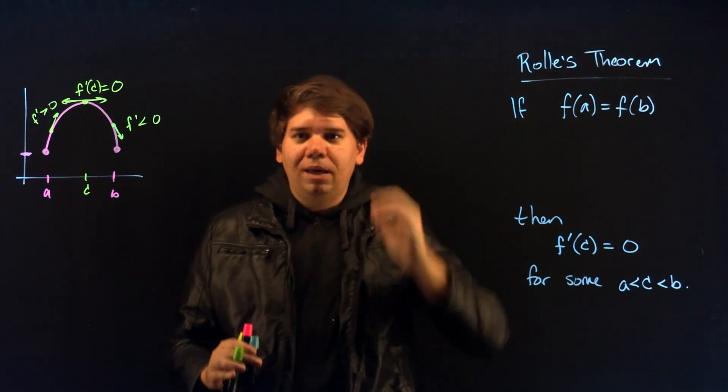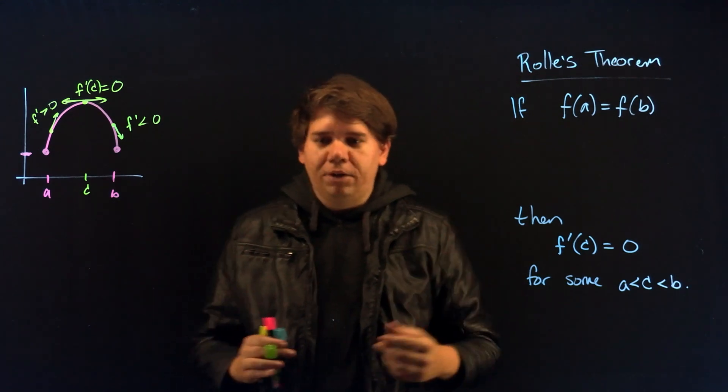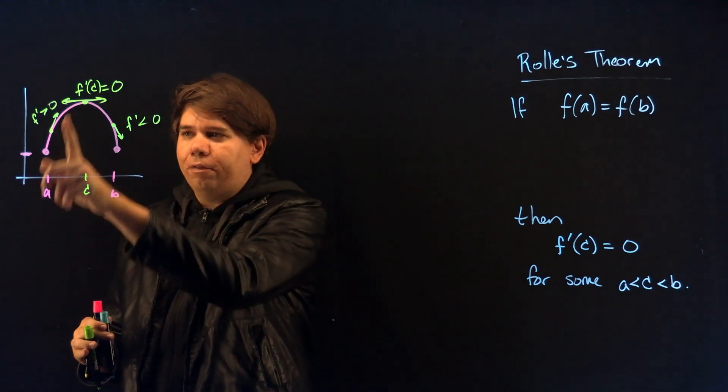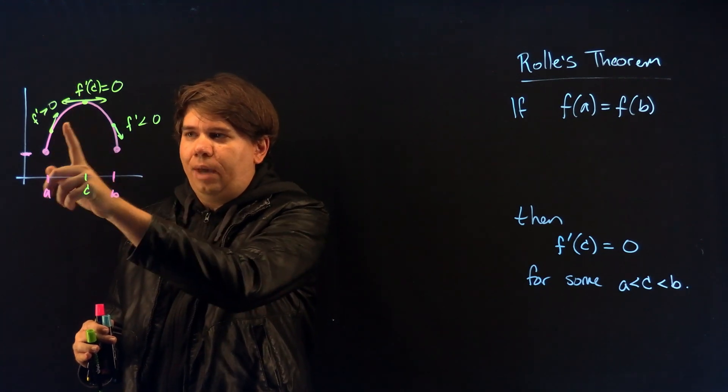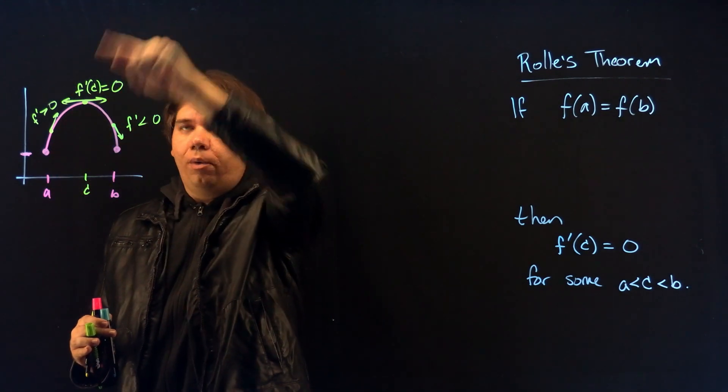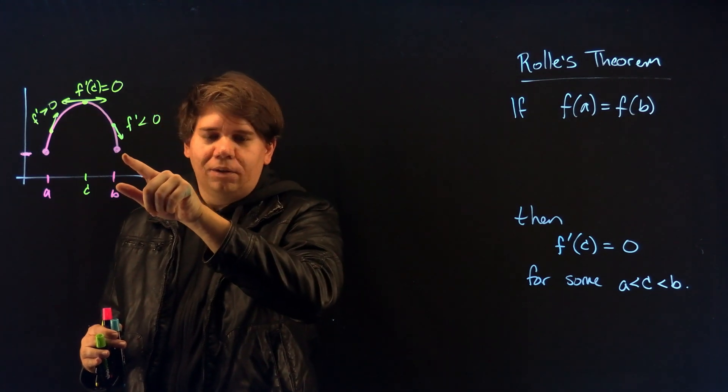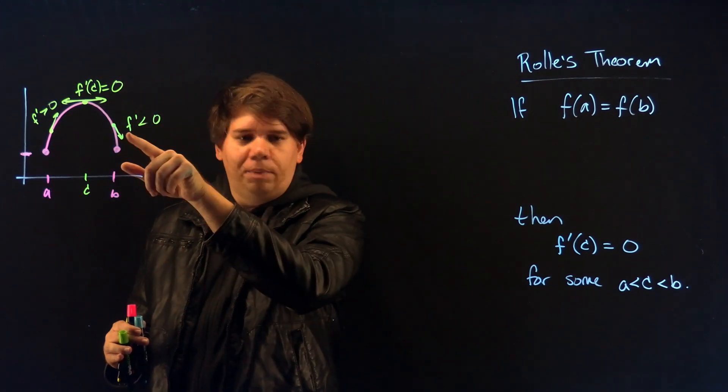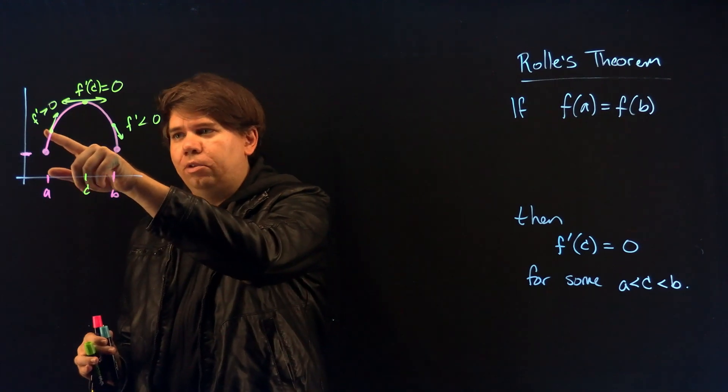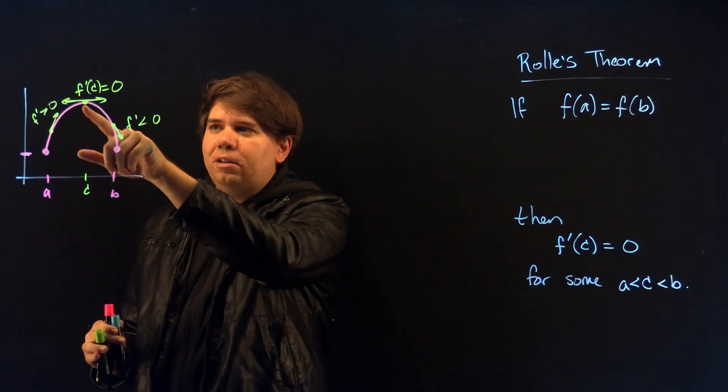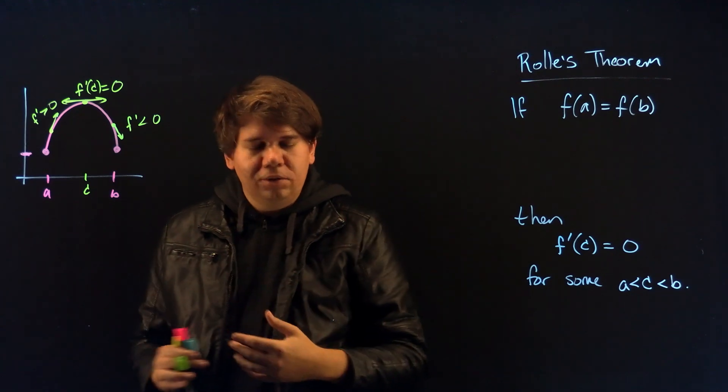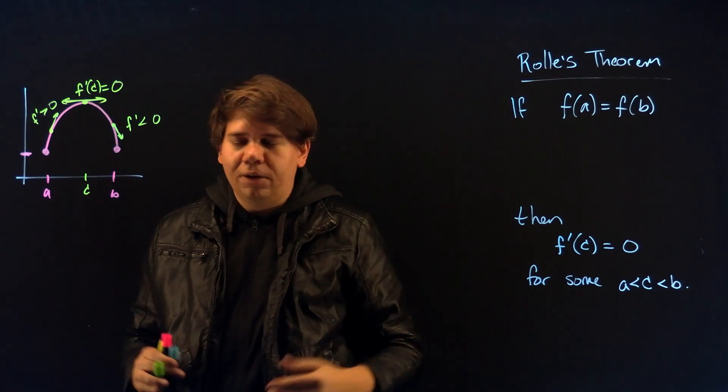Why is this true? Well you should think this is just a consequence of the intermediate value theorem. If you start off being positive then you can't go up forever, if your function is always going up you would never get back down to the same height as when you started so eventually you must change to be negative but in order to change from derivative being positive to negative it must pass to a point where the derivative is zero. So this is just a consequence of the intermediate value theorem.